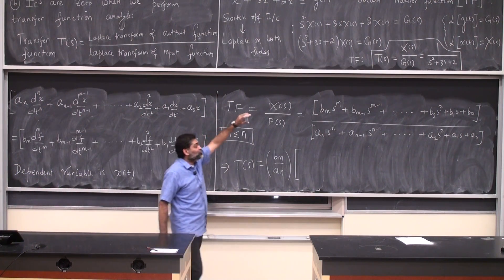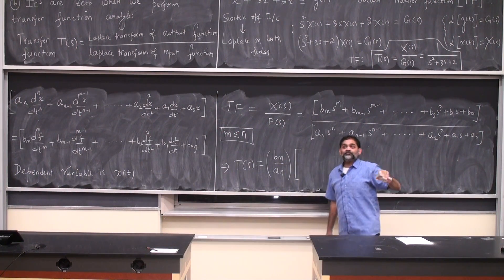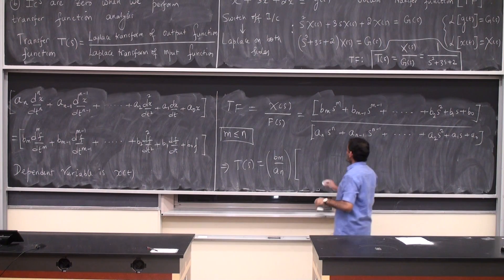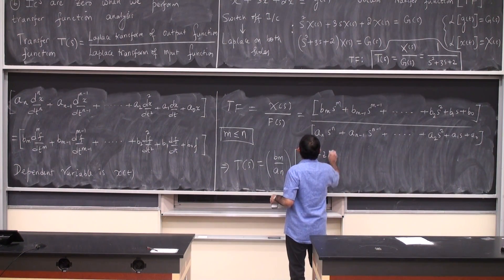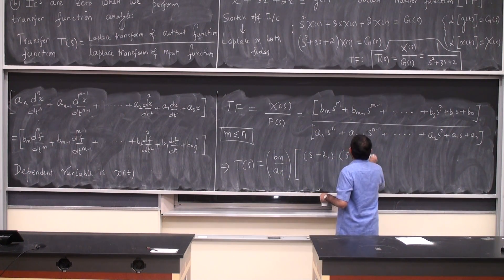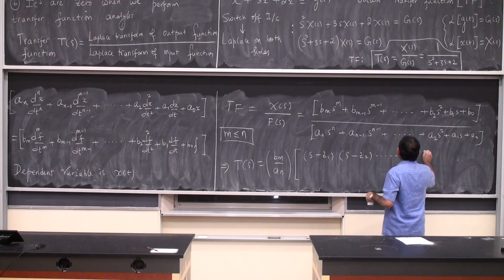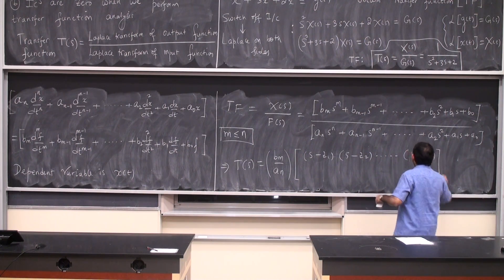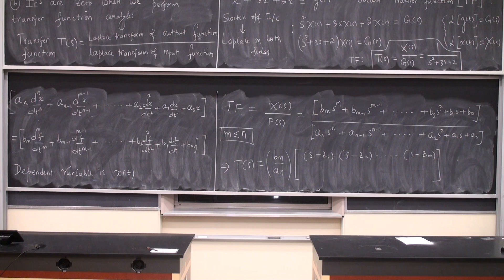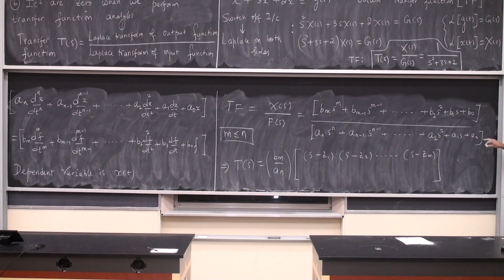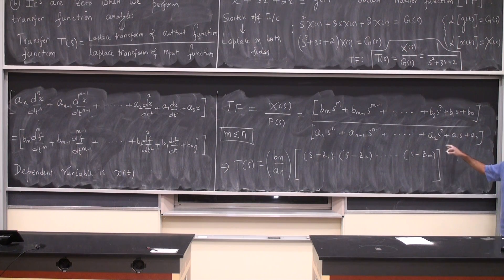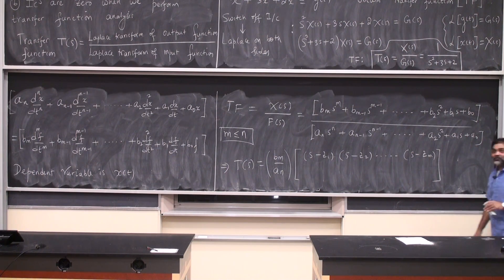I factor the numerator into its roots and I'm going to call them as roots z_1 through z_m. I will have m number of roots because the order of the numerator is m. The order of the denominator is n, it will have n roots.